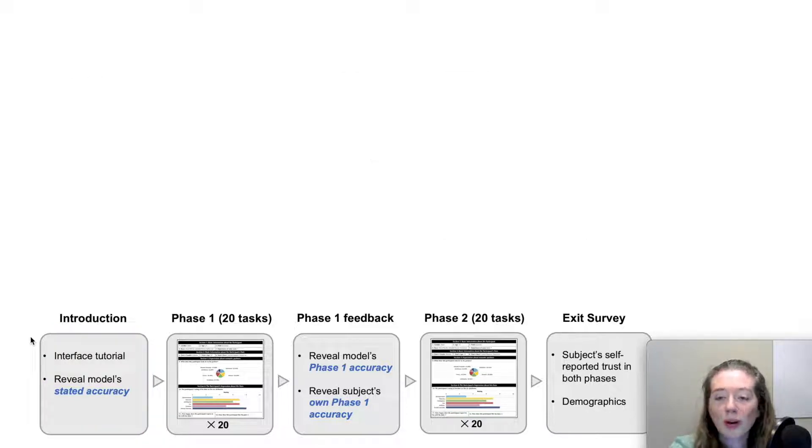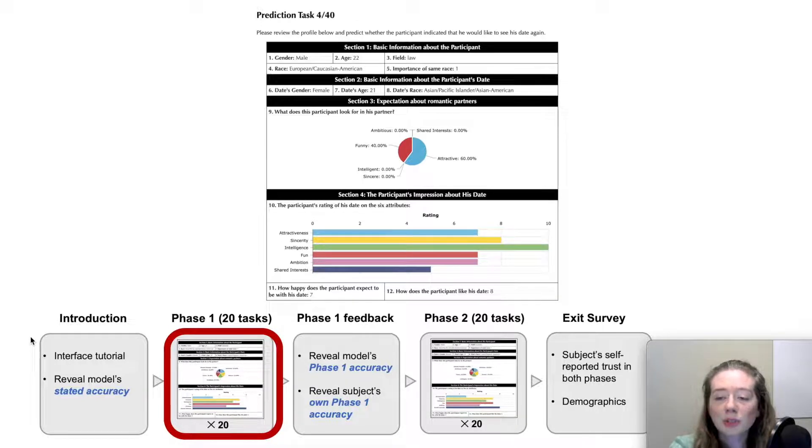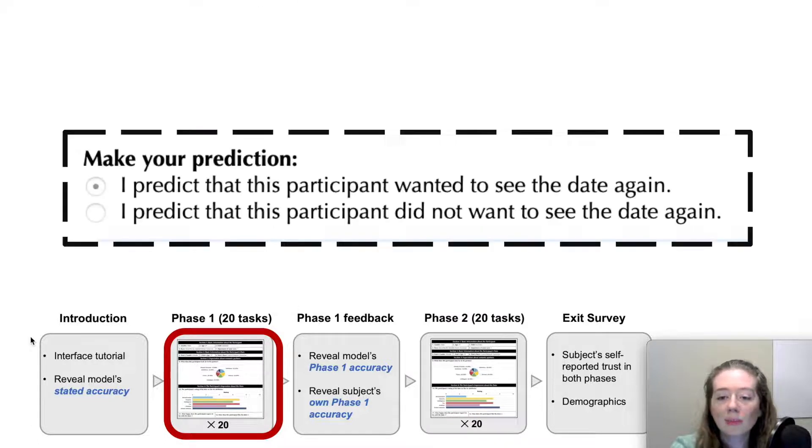Next, the subjects completed 20 prediction tasks in phase 1. For each task, the subject was presented with a profile of a participant and their date in a speed dating event. We asked our subjects to first review the profile and then make their own prediction of whether or not the participant in the profile would want to see the date again.